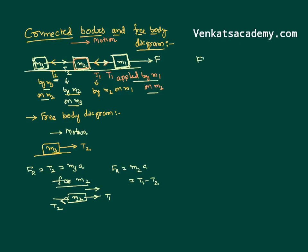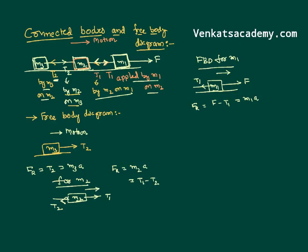Let us consider the same free body diagram for M1. I have to count the forces acting on M1. On M1, the applied force F is there. And I have to take the force applied by M2 and acting on M1, which is nothing but T1. So I can write: F resultant — as the system is going to move in this direction — is F minus T1, which equals M1 times A. So now I have three equations and three unknowns: T1, T2, and acceleration.